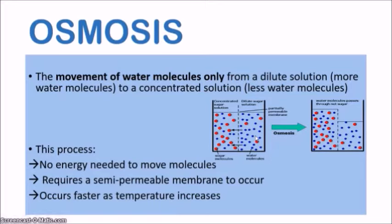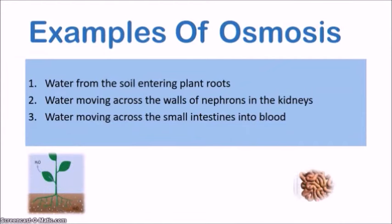A key thing to note about osmosis: it requires a semipermeable membrane. No energy is needed to move the molecules, and like diffusion, it occurs faster as temperature increases. In this experiment shown in the diagram, the water molecules move from the dilute sugar solution, pass across the semipermeable membrane, and end up in the concentrated sugar solution. Water molecules are small enough to pass through, but sugar molecules are too big. So the water level on the dilute side decreases and the concentrated solution becomes more diluted.